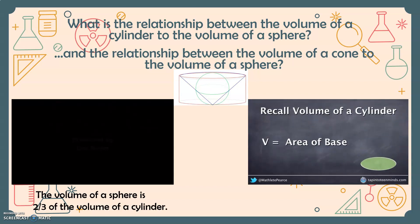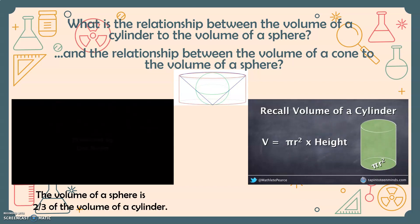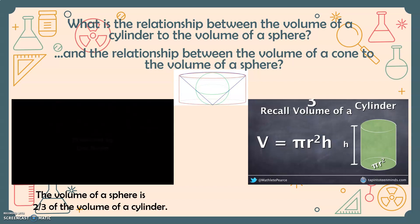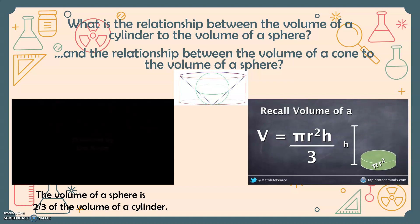If we remember, the area of the base is πr², since the area of a circle is πr². We can get the volume of that cylinder by multiplying by the height. We later learned that to get the volume of a cone, we would take the volume of the cylinder with the same height and same radius, and simply divide it by three.